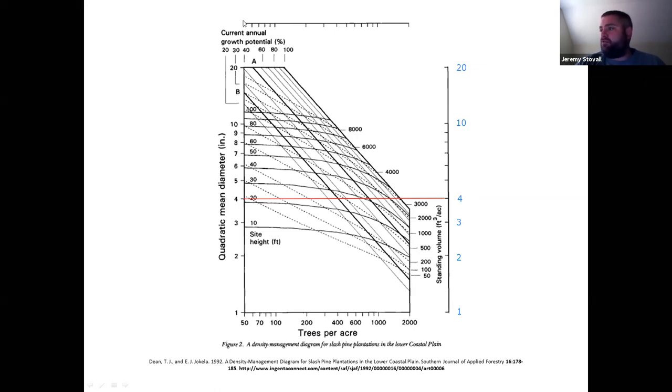It counts from 50 to 100 by 10s, 50, 60, 70, 80, 90, 100. Then it counts from 100 to 1,000 by 100. It's 100, 200. This tick mark is 300, 400, 500, 600, 700, 800, 900, 1,000. Then it skips all the way to 2,000.